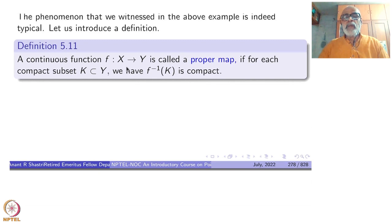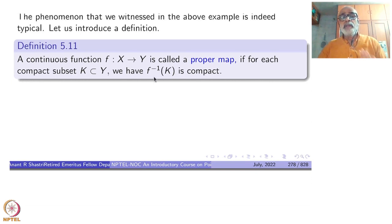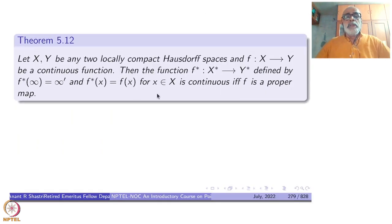Remember: if you have a continuous function, the image of a compact set is compact — that comes freely. Now we want the inverse image to be compact. Note that f can be an infinite-to-one map — no problem — but I want the inverse image of a compact set to be compact. We are not assuming f is one-to-one; the inverse of a set makes sense, and that is all we are using.